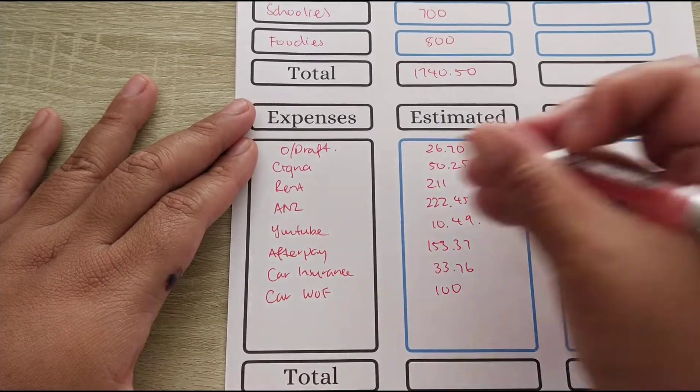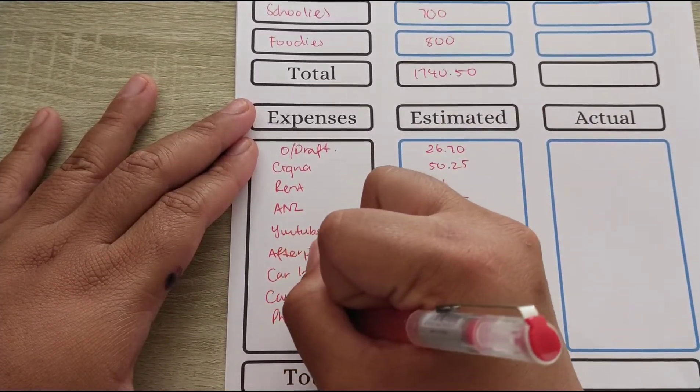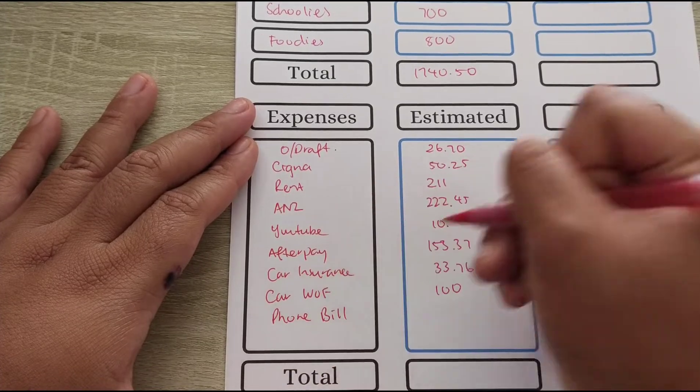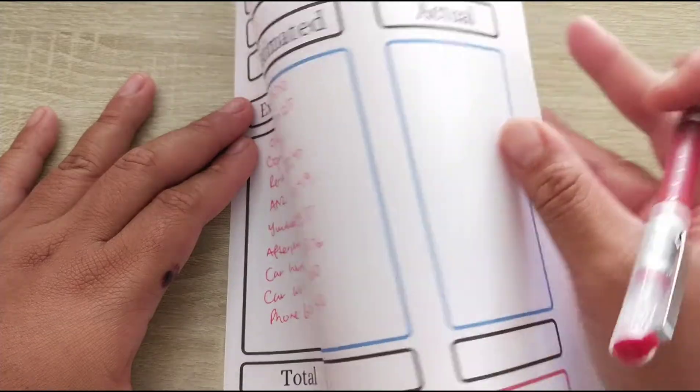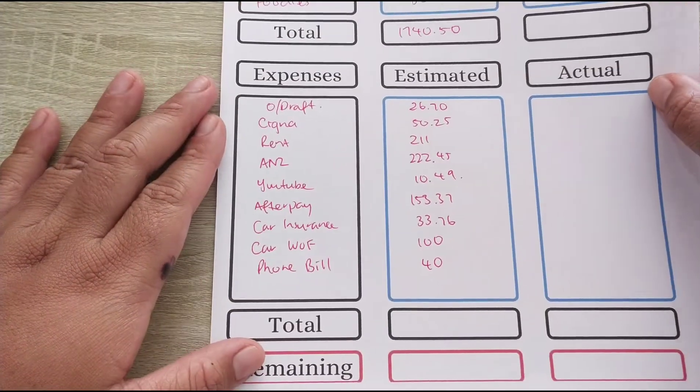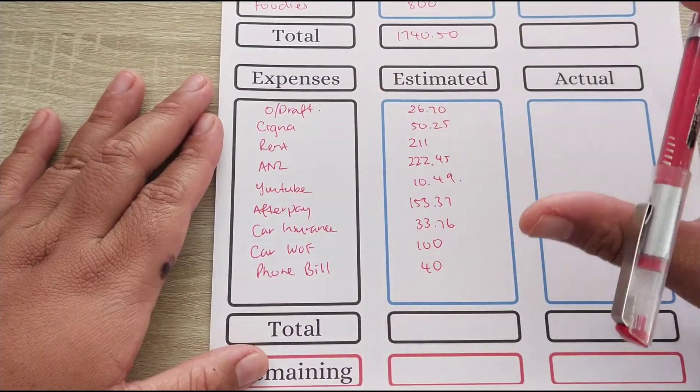I've also got Afterpay that is $153.37. I've got car insurance, so I have added car insurance this week and that is every fortnight and that is a new expense that will be added to my bills. I've got car warrant of fitness that we need to pay of $100. And then lastly I have a phone bill coming out as well, so I will be using my bills sinking funds to help with that. Yeah, quite a lot of expenses to pay this week.